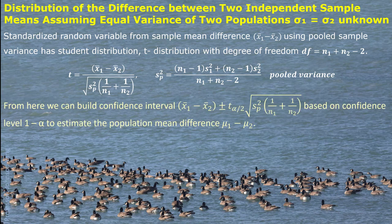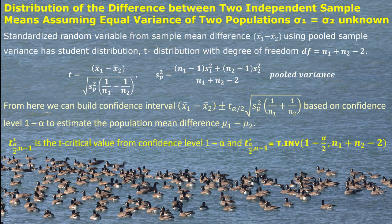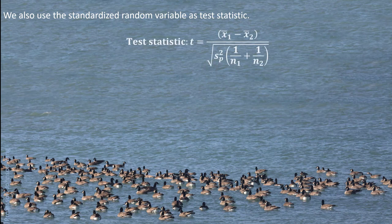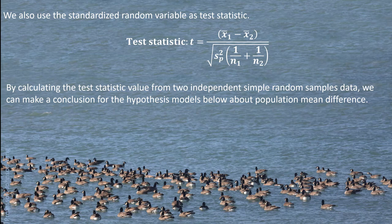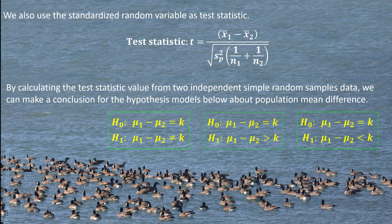We can build up the confidence interval with a similar structure. Similarly, the t critical value can be figured out from an Excel function. We can use the standardized t-test statistic to make the decision about the hypothesis for the population mean difference — either two-tailed or one-tailed.